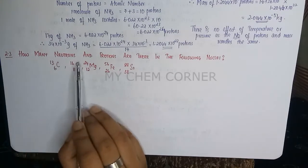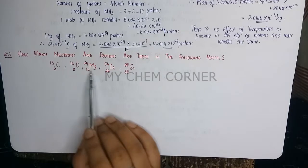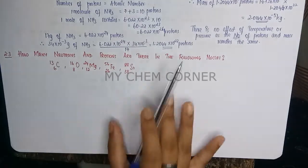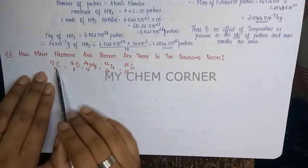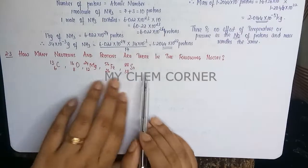So the next question is: how many protons and neutrons are there in the following nuclei? There is a set of nucleus given to us. Before we solve this, let's see what the formula for a neutron and a proton is.